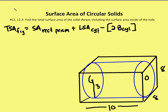So here we go. The total surface area of the figure equals the surface area of the rectangular prism plus the lateral surface area of the cylinder, which is the inside portion, minus the two base areas of the cylinder. So let's tackle the surface area of the prism first.